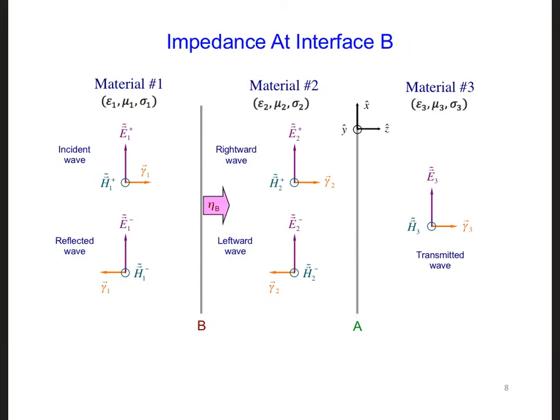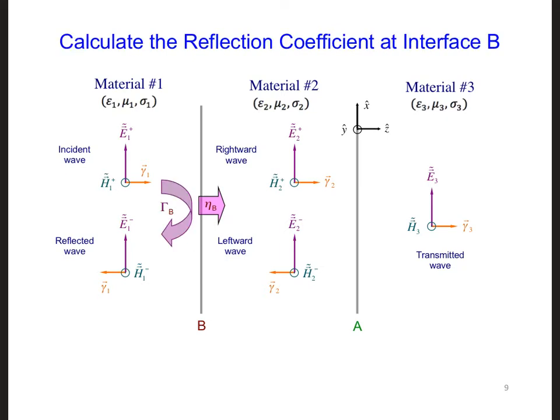We can recognize that the input impedance at B plus is going to be the same as that at B minus. We can get just to the left of this interface, and recognize an infinitesimally small distance to either side, we're going to have the same input impedance. Then we can use eta B here, which is the input impedance at interface B, to calculate the reflection coefficient for the slab, and it takes into account everything to the right of it.